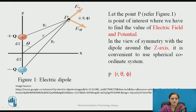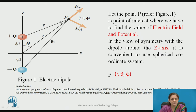Point P is placed at distance R from the center of the dipole. In view of the symmetry of the dipole around the z-axis, it is convenient to use the spherical coordinate system. Therefore, point P is defined in the spherical coordinate system as (R, theta, phi).